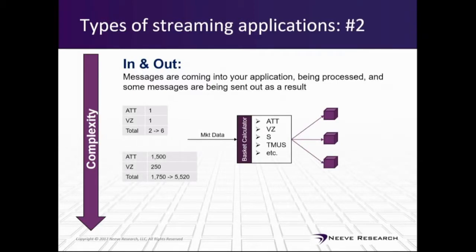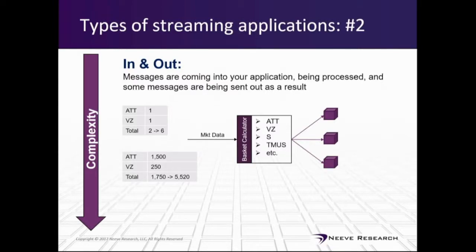With real numbers: AT&T ticking at 1,500 messages per second and Verizon at 250 means you're processing 1,750 ticks. With three connected clients, you're actually publishing 5,250 ticks. Large financial firms like Goldman Sachs, Bank of America, and eBay have dedicated market data teams for exactly this reason. Because of all this complexity, we classify this one as hard.